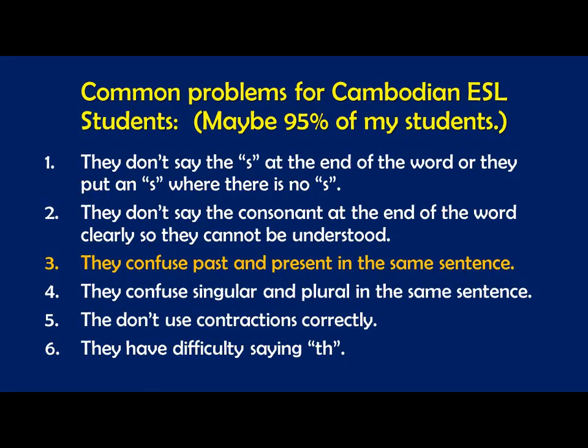Number one: they don't say the 's' at the end of the word, and they put an 's' in the sentence where there is no 's'. This is so common. You must say the sound of the 's' when there's an 's', and when there is no 's' in the sentence, don't add one. For example, the title 'common problems for Cambodian ESL students' — students will often say 'common problem for Cambodian ESL student,' forgetting the 's'. If there is an 's', you must say it.